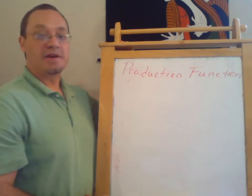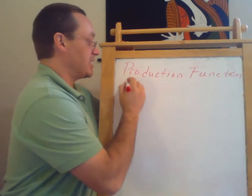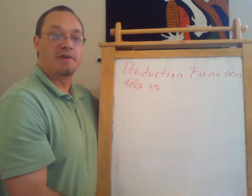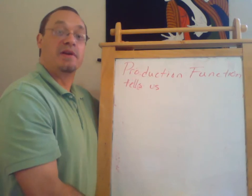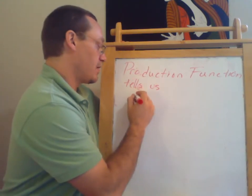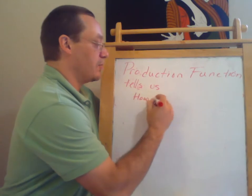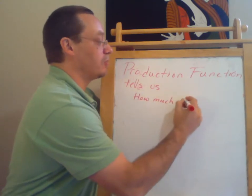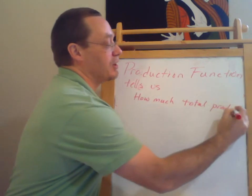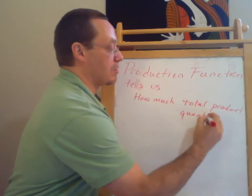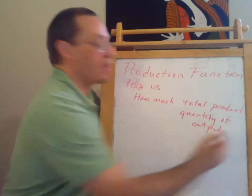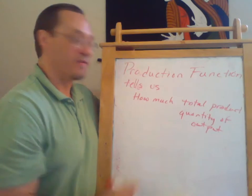The production function tells us how much a firm can produce with a given amount of inputs. So how much total product, also called quantity of output, from a given set of inputs.